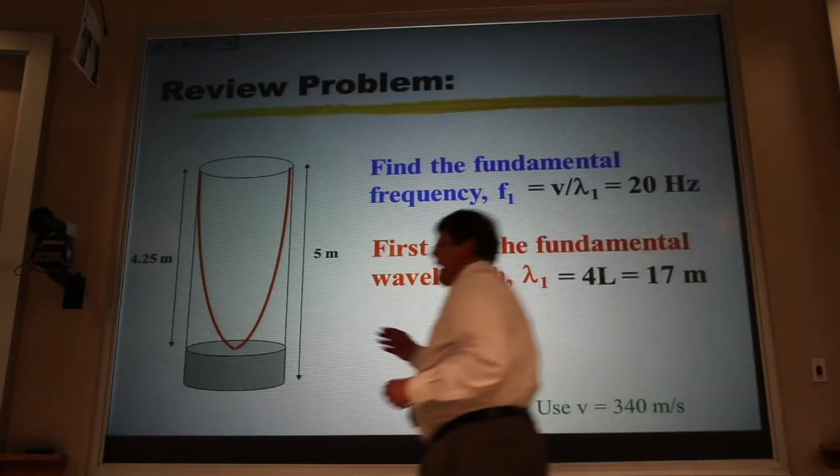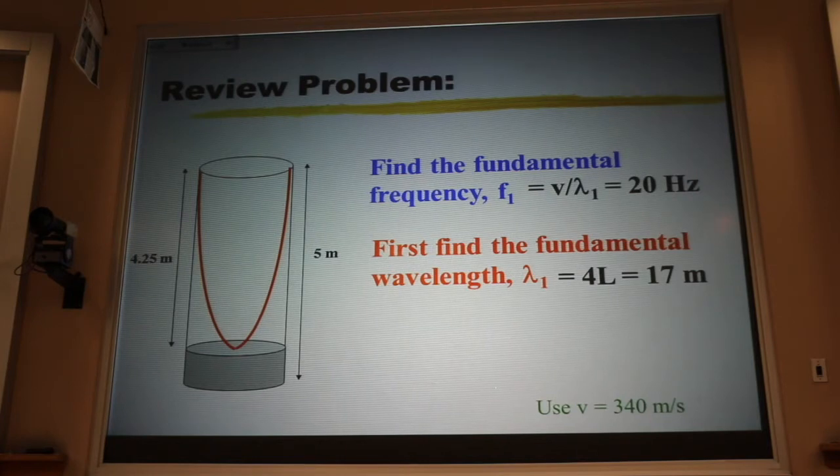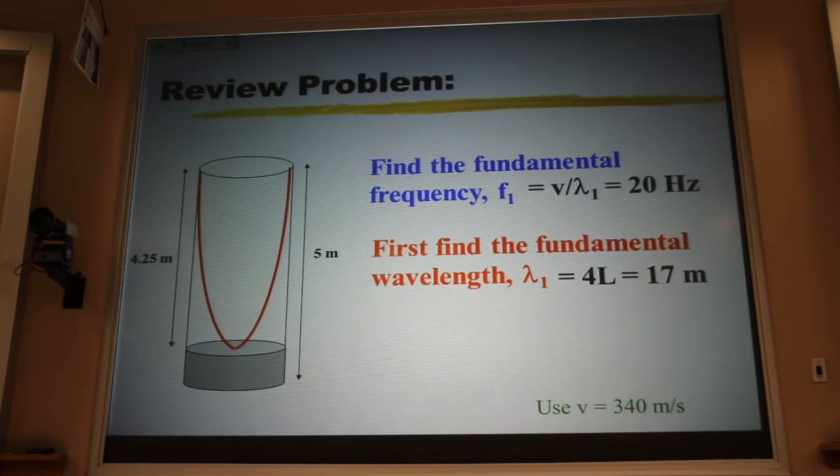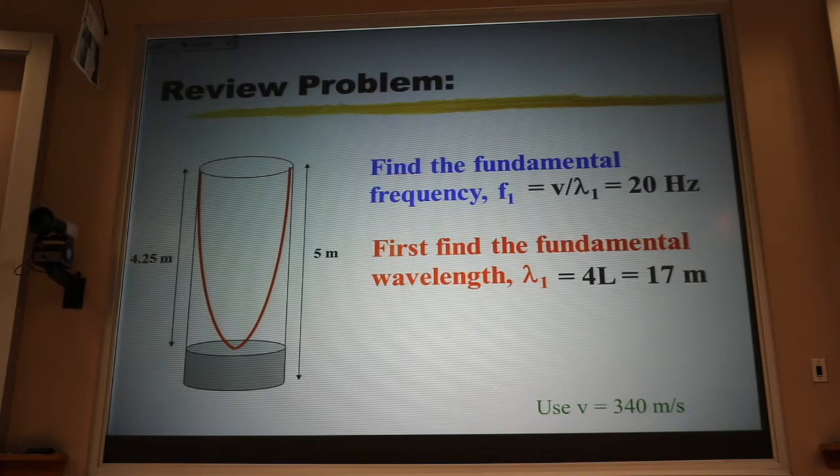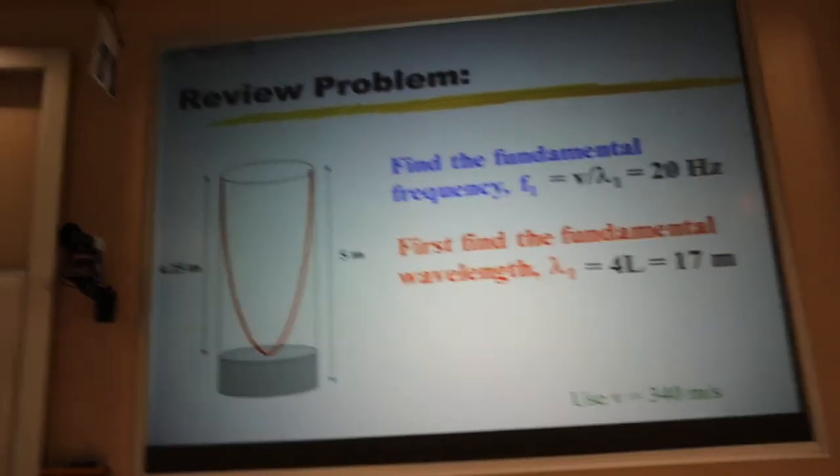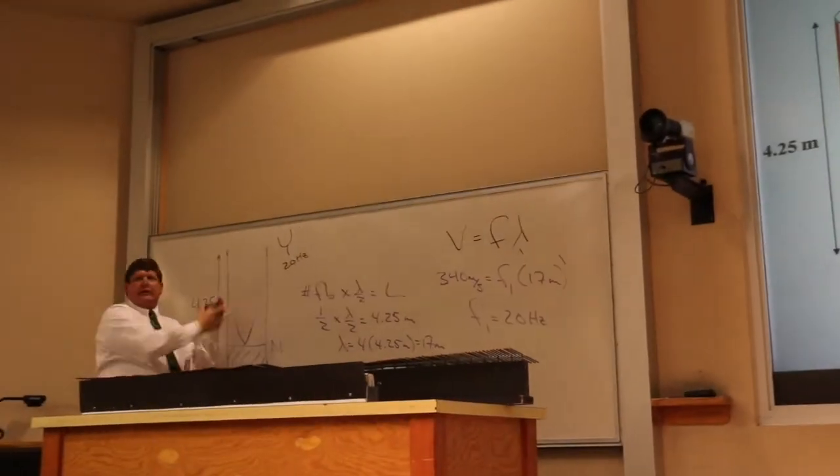If I were to just blow air across the top of this air column, making white noise, 20 hertz is a sound that would resonate. And we might or might not hear that, because it's right on the edge of human hearing. But still, that would resonate in the tube. What that means is that if I brought a tuning fork that was 20 hertz, I could excite the fundamental.